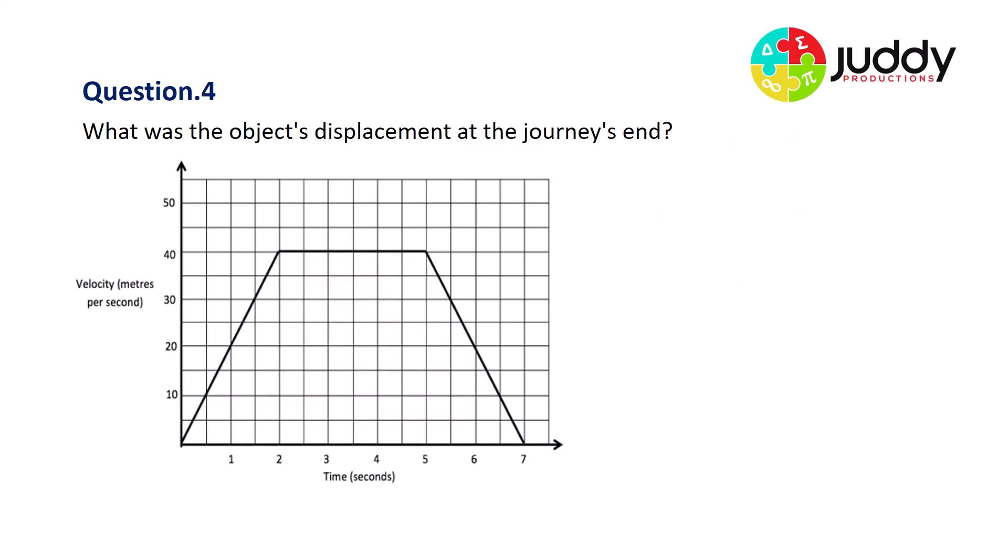What was the object's displacement at the journey's end? So as the graph is always above the x-axis, the displacement is equal to the distance traveled. This object never went backwards. It's always traveling forwards. So the magnitude or size of the displacement is equal to the distance. So it's also 200 meters. But displacement being a vector needs a direction associated with it. So the total answer is it's 200 meters forwards.